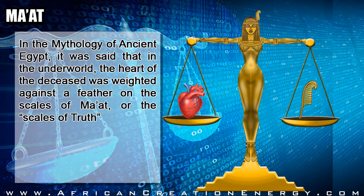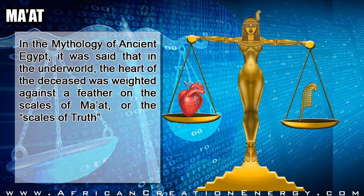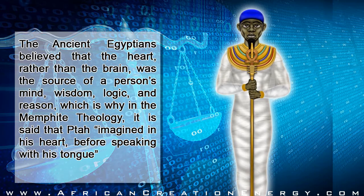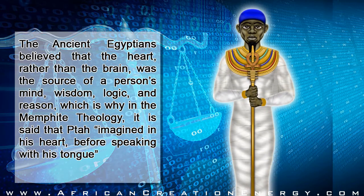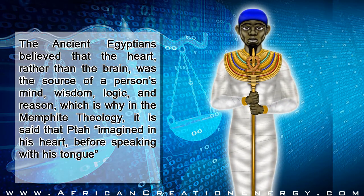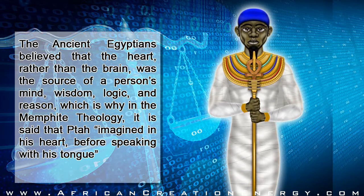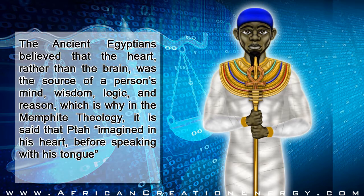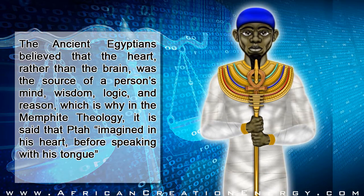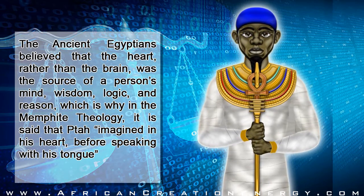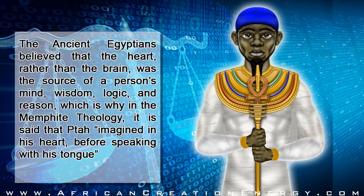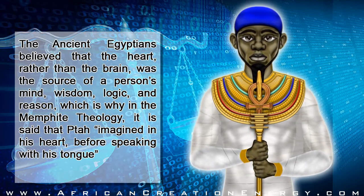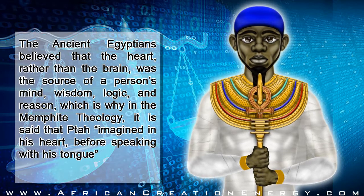In the mythology of ancient Egypt, it was said that in the underworld the heart of the deceased was weighed against a feather on the scales of Ma'at, or the scales of truth. The ancient Egyptians believed that the heart, rather than the brain, was the source of a person's mind, wisdom, logic, and reason. This is why in the Memphite theology it is said that Ptah imagined in his heart before speaking with his tongue, because they believed that the heart was the source of the mind and imagination.